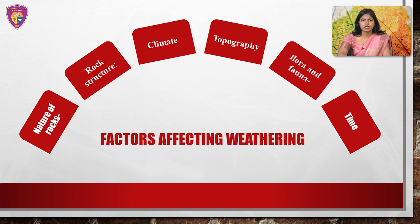Flora and fauna also affect weathering, as grass roots and roots of trees exert pressure as they enter the cracks and crevices and break the rocks apart. While decaying natural vegetation provides carbon dioxide and organic acids for chemical reaction, earthworms, burrowing animals such as rodents, termites and jackals play an important role in preparing material for further removal by rain or wind. The duration for which the same type of weathering operates, uninterrupted by climatic change, earth movement and other factors, determines the degree and depth to which the rocks get weathered.